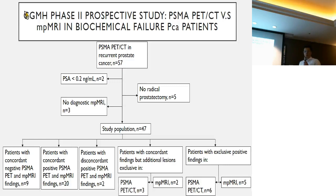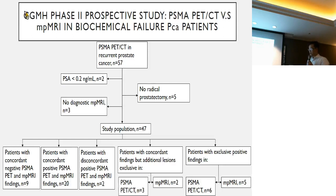From this chart, you can see the patient distribution. Basically, there are five patients with concordant positive and negative findings. Two patients have discordant findings with MRI. And there are five cases with concordant findings where the lesion is supposed to be detected by both PSMA PET and multi-parametric MRI.